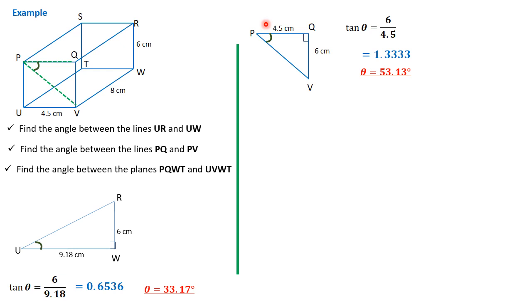We go to the last question. We're told to look for the angle between the planes P,Q,W,T and U,V,W,T. As we operate this, we are supposed to imagine a lot. Since we have the figures drawn in a two-dimensional plane representing a three-dimensional object, please imagine so that you can be able to see the planes P,Q,W,T.